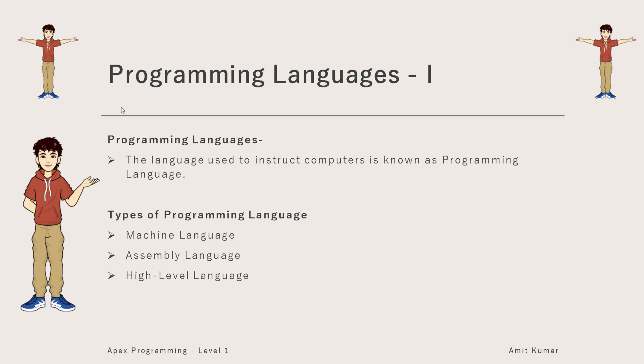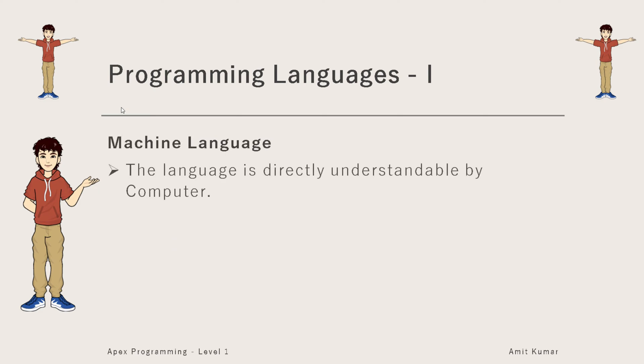Machine language is the language directly understandable by computers. A language which is directly understandable by computers or machines is known as machine language. Basically, this language is composed of only binary numbers, so everything is written in form of binary numbers only.